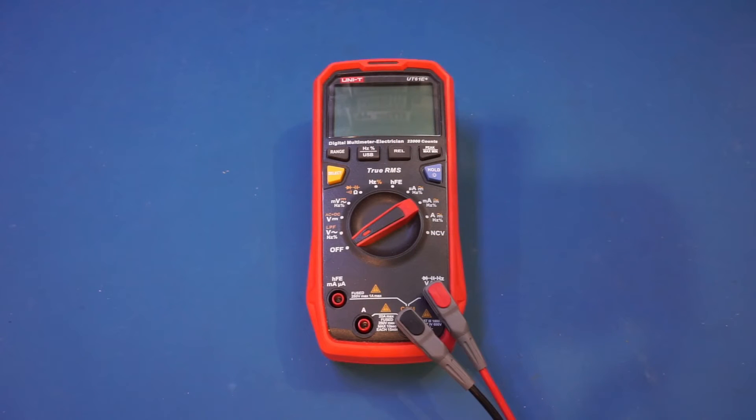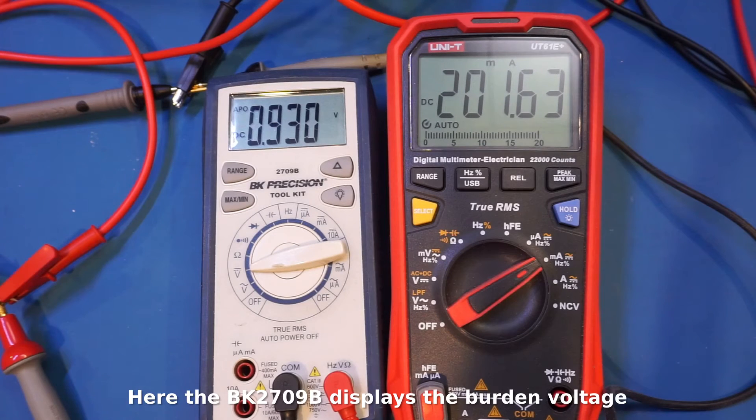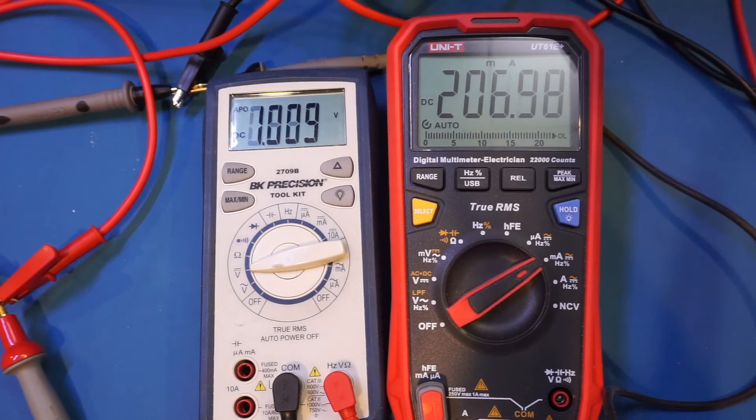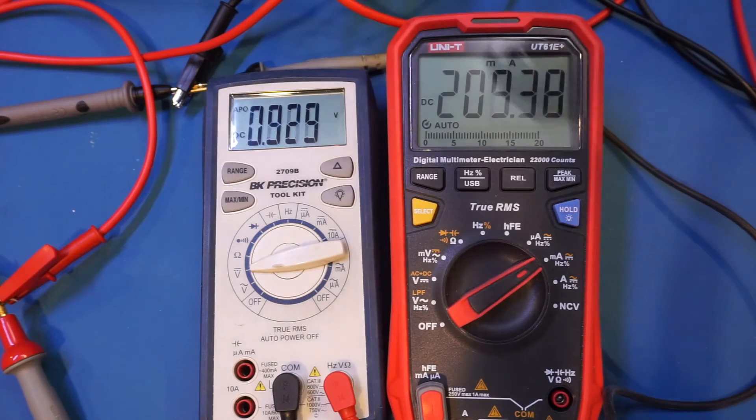Next, I want to talk about the high burden voltage while doing current measurement. Now, it is not uncommon for multimeters to have high burden voltages while measuring current. It all depends on the multimeter design. The burden voltages for different current ranges are noticeably higher on this multimeter compared to other similar multimeters with similar current measurement ranges.